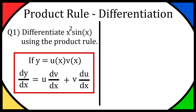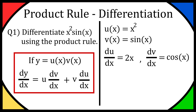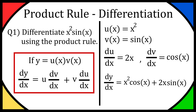Hey everyone, so today I'm going to be doing the product rule for differentiation. So question 1 says differentiate x squared times sine x using the product rule. The product rule is that if y is equal to u(x) times v(x), then dy over dx is equal to u times dv over dx plus v times du over dx. So let's define u(x) and v(x): u(x) is x squared and v(x) is sine of x. So du over dx is going to be equal to 2x. dv over dx is equal to cos of x. So dy over dx is equal to x squared cos of x plus 2x sine of x.